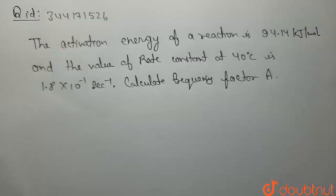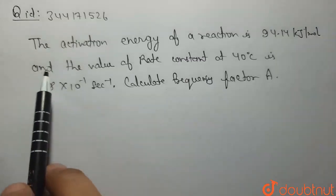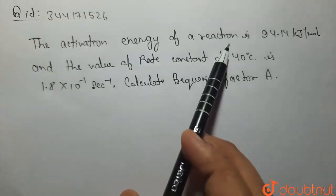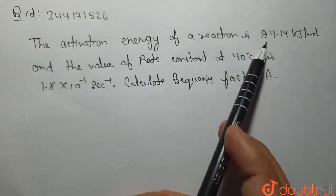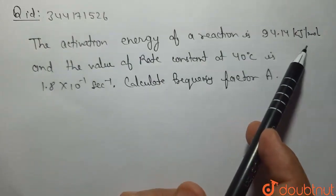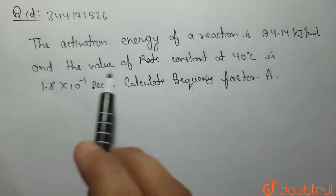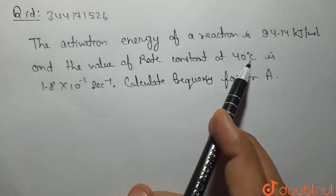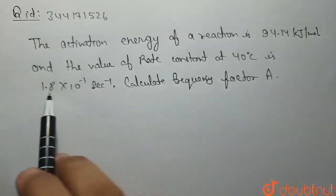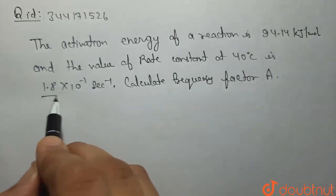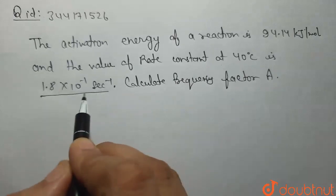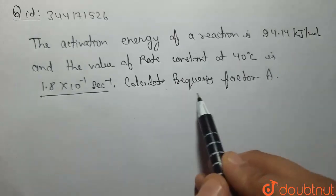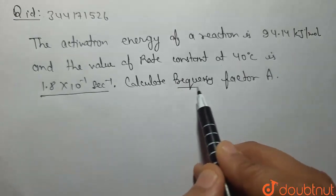Hello everyone! The question is: the activation energy of a reaction is 94.14 kJ per mole and the value of rate constant at 40 degree Celsius is 1.8 × 10⁻¹ second inverse. Calculate the frequency factor.